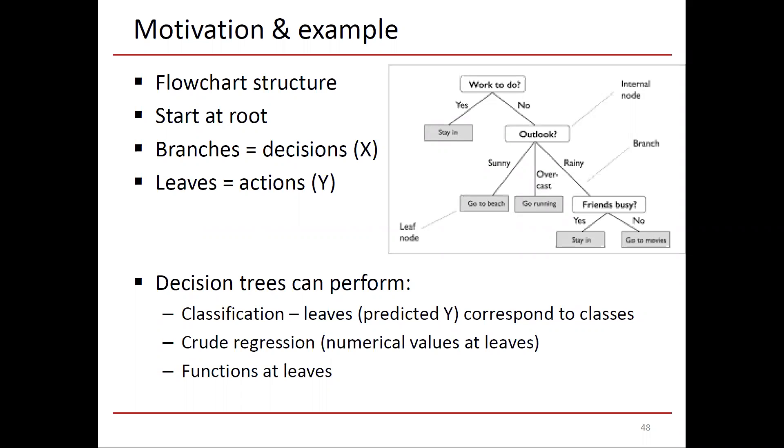So overall, there's a flowchart structure starting at the node. The branches are decisions, X. The leaves are actions, Y. From X, the input, to actions, Y.